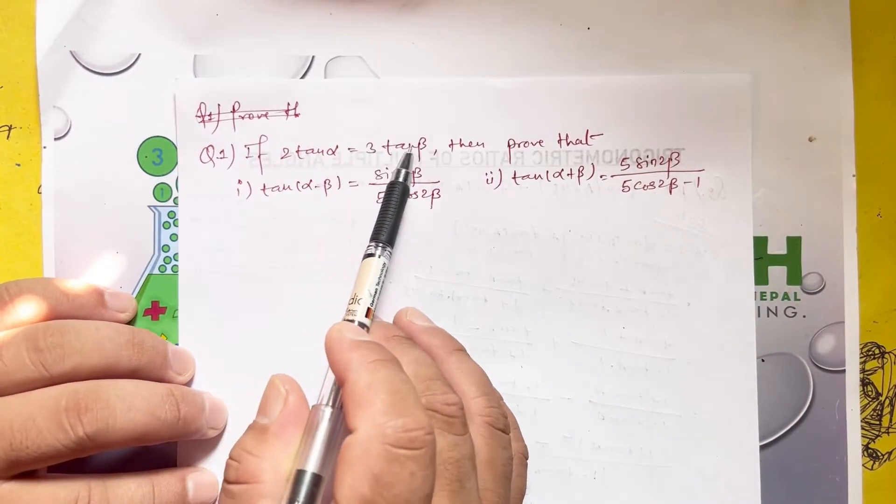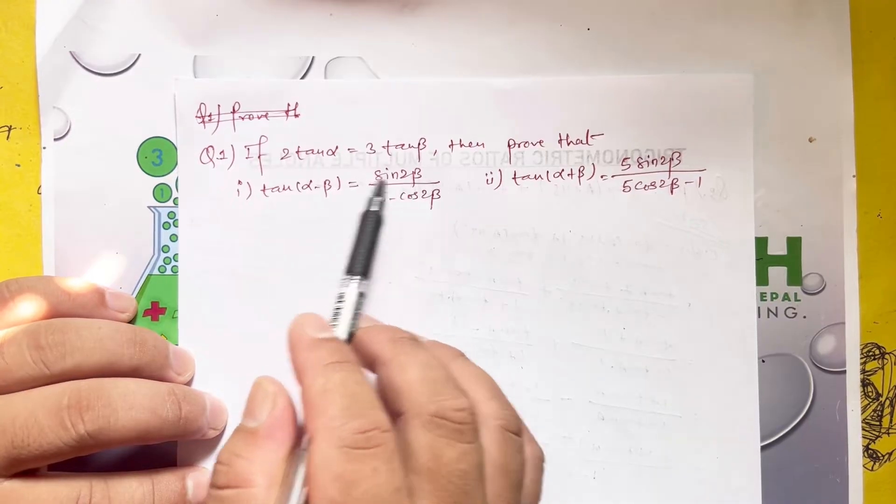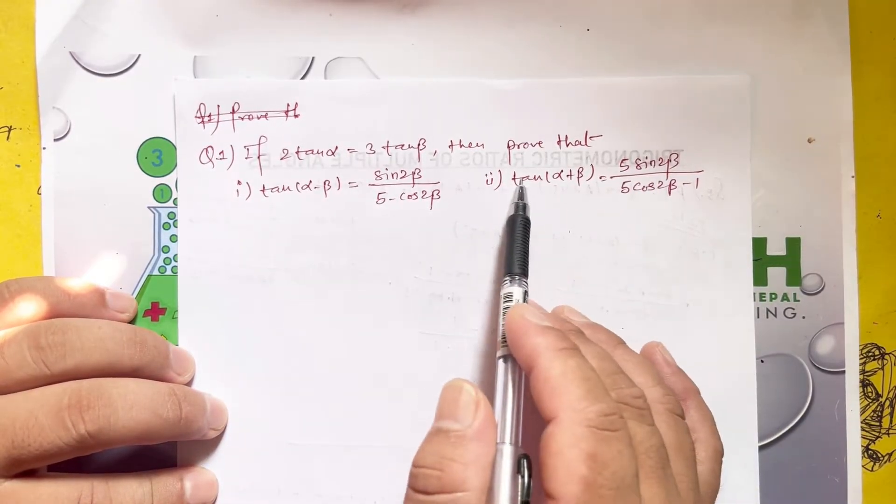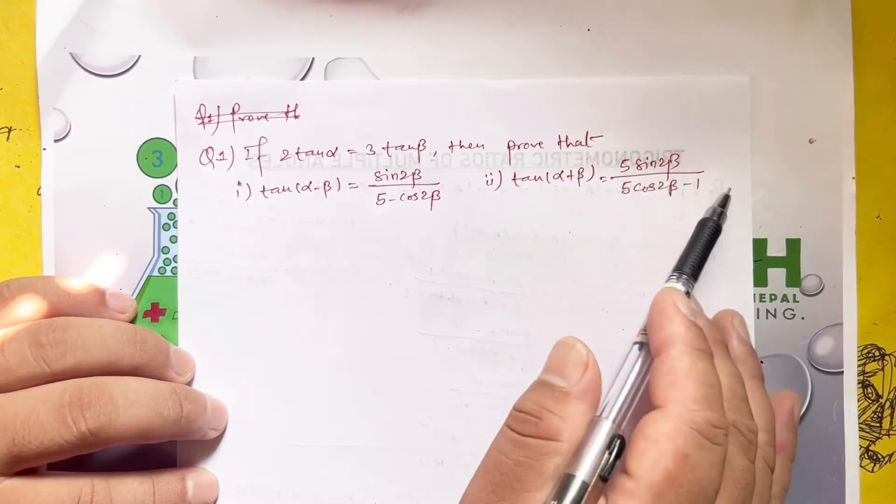If 2 tan alpha equals 3 tan beta, then prove that tan of alpha minus beta equals sine 2 beta divided by 5 minus cos 2 beta, and tan of alpha plus beta equals 5 sine 2 beta divided by 5 cos 2 beta minus 1.